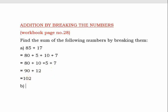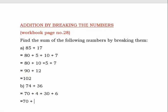The next question is 74 plus 36. We have to break these numbers. 74 can be written as 70 plus 4, and 36 can be written as 30 plus 6. Now we write the tens together: 70 plus 30, and the ones together: 4 plus 6.